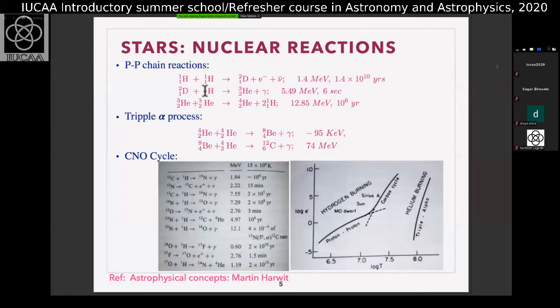So you produce deuterium with low probability and difficulty, but once you produce deuterium, it immediately finds the next hydrogen and produces helium-3. You do this reaction twice: start with two hydrogen atoms producing one deuterium, then a third hydrogen atom gives helium-3, done twice. Two helium-3 atoms combine to give one helium-4 and two hydrogen atoms are released. So you have used four hydrogen atoms to produce one helium — that's the PP chain.